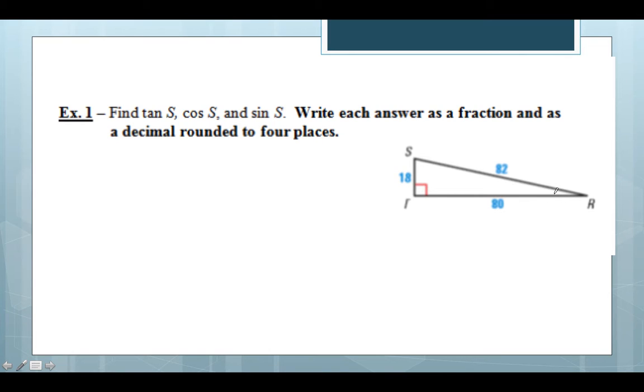All right, example one says to find tan of angle S, cosine of angle S, and sine of angle S. Write each answer as both a fraction and as a decimal rounded to four places. Looking at this we're not actually finding an unknown side length since we know all three of the side lengths in this right triangle. What we're doing instead is we're just practicing setting up the ratios.